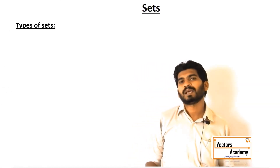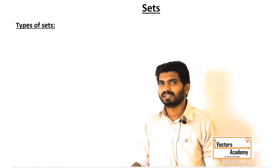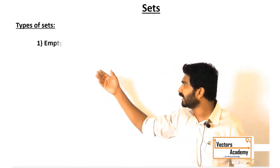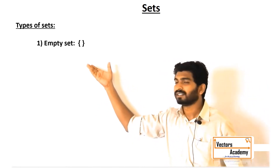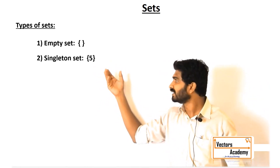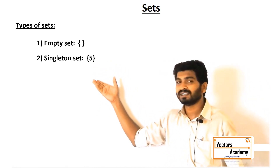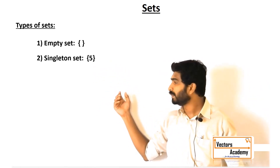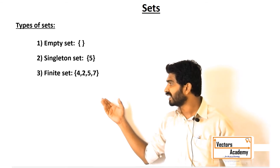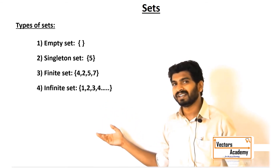There are four different types of sets: the first one being an empty set, the second is a singleton set, the third being the finite set, and the fourth being the infinite set.